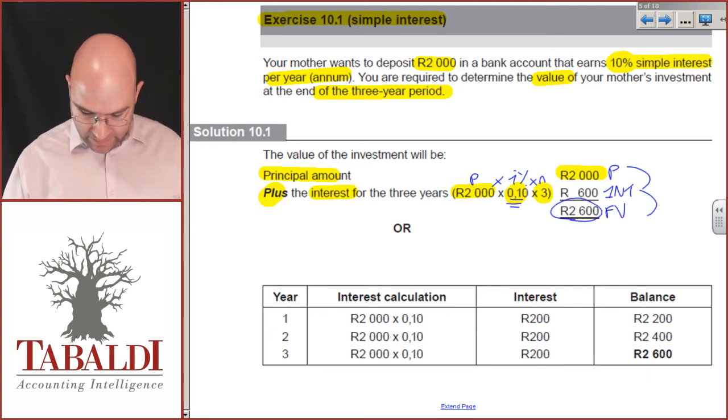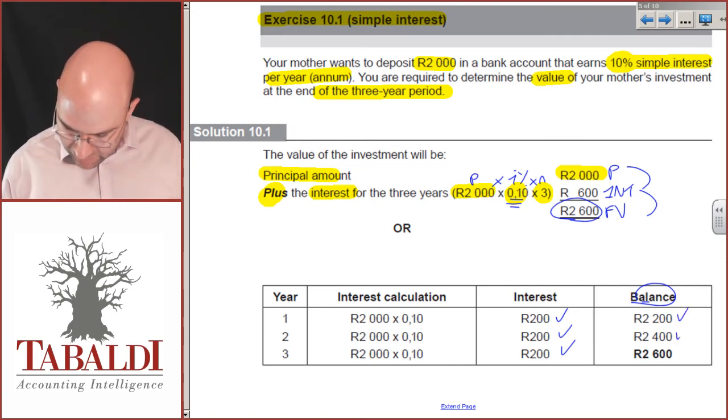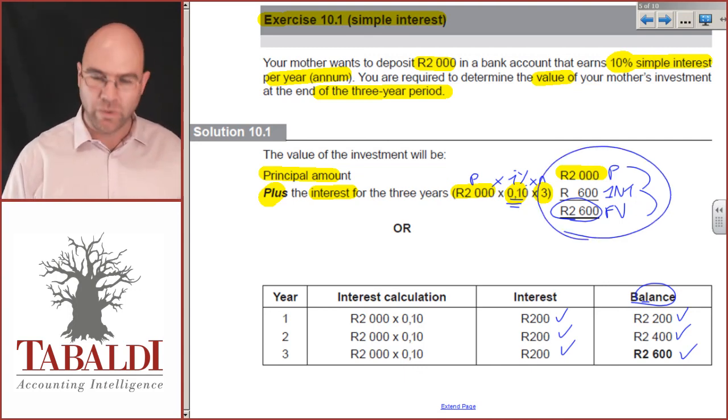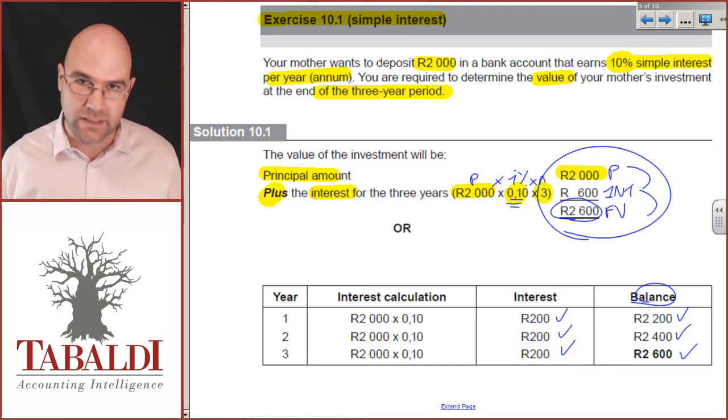Principal plus interest gives me the future value of 2600. I could have gone and done this year by year, 2000 times 10%, 200 for each of the years, and added the 2000 plus 200 is 2200. Plus the next 200 is 2400, plus another 200 is 2600. Either way, I prefer this first way. What happens if there's 20 years? Then you'll take forever to do a table.